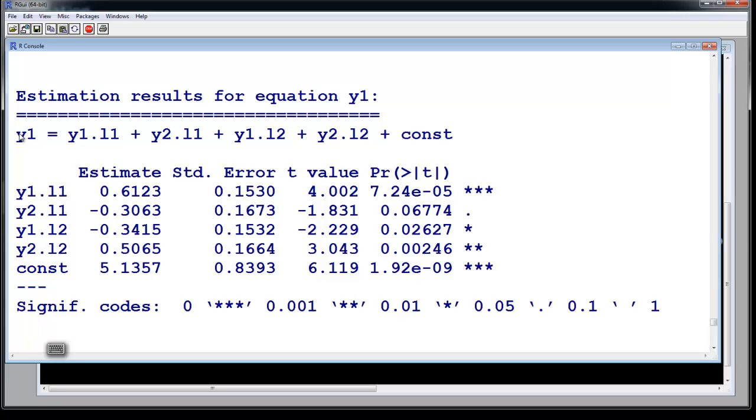This is the result for first coefficient y1. So y1 lag 1 is 0.61, so what we fed in was 0.6. y2 lag 1 is minus 0.3. Then you have lag 2, lag 3. Notice that these are different from what we initially fed in. In fact, every time I simulate a new VAR matrix you get different lags and we can write this down in an equation and the constant comes to be 5.1. Notice that the constant we started with was 4.